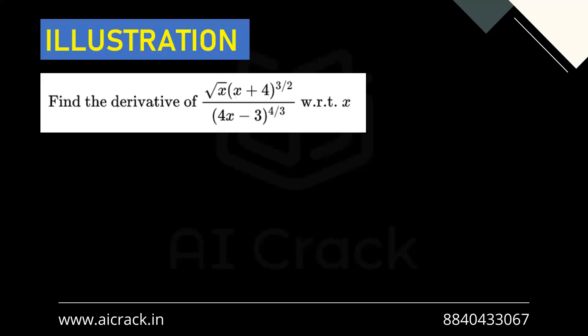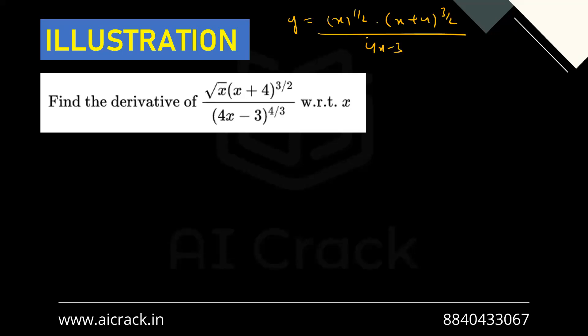Let's see log differentiation in action. In this example we have: y = √x · (x+4)^(3/2) / (4x−3)^(4/3). We can see this function cannot be rationalized or factorized, and applying the quotient rule with powers like 3/2 and 4/3 would be very complicated. So it's better to apply log differentiation. We have y = x^(1/2) · (x+4)^(3/2) / (4x−3)^(4/3). Taking ln of both sides: